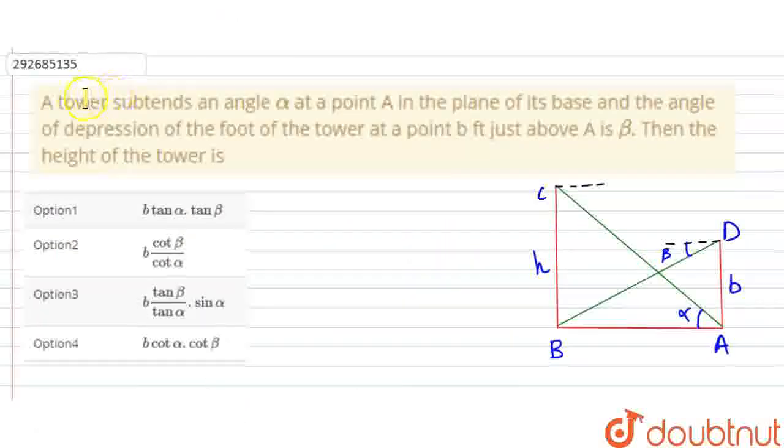Hello friends, in this question, a tower subtends an angle alpha at a point A in the plane of its base, and the angle of depression of the foot of the tower at a point B feet just above A is beta. Then the height of the tower is what?